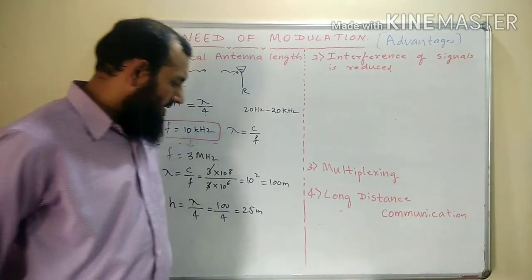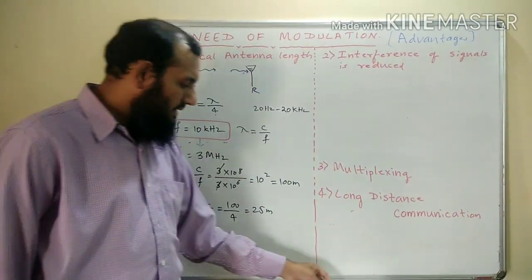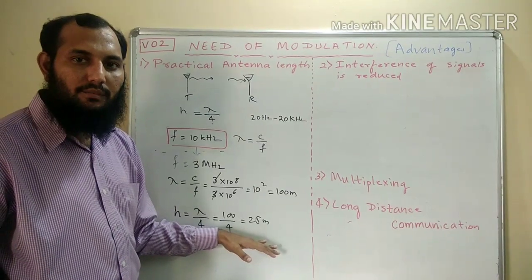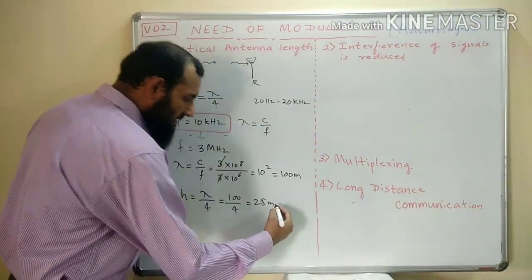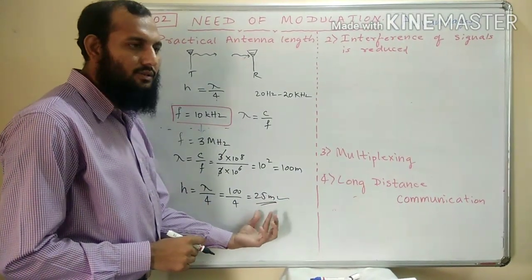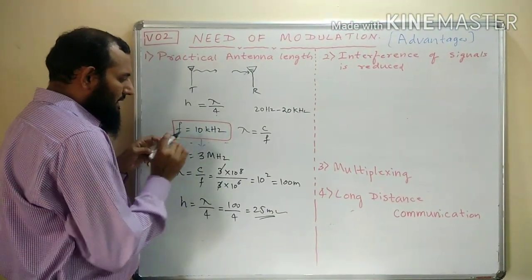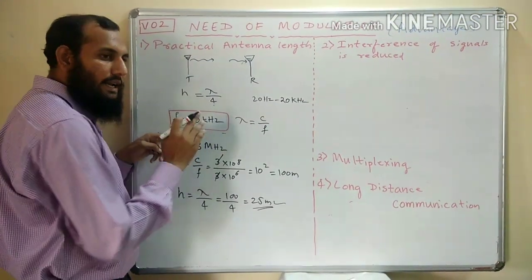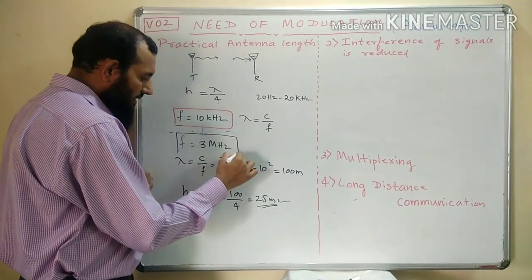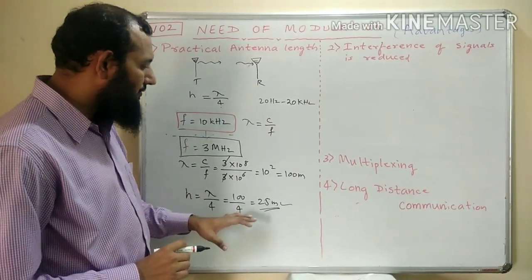Is constructing an antenna of height 25 meters practical? In the earlier case, the antenna needed to be 7.5 kilometers, but in this case it is only 25 meters. It is practical to construct a 25-meter antenna, and in fact all the antennas we see around us have dimensions around this value. So to transmit a low frequency signal, a very tall antenna is required, whereas to transmit a high frequency signal, a practical antenna length is needed. This is the first advantage of the technique of modulation.